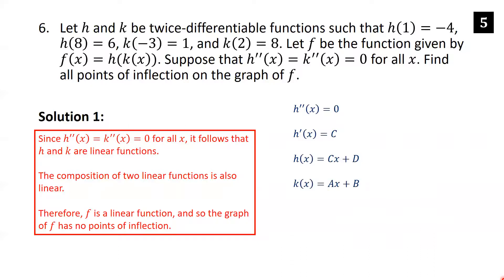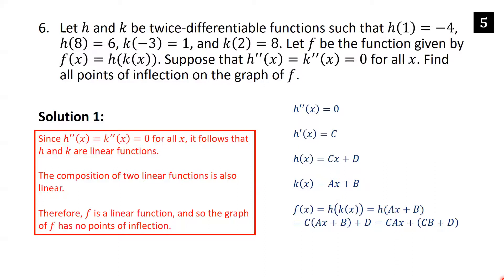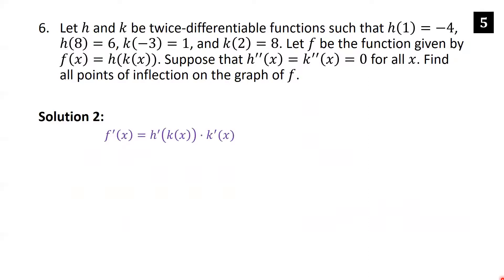To fill in the details: if h''(x) = 0, then anti-differentiating gives h'(x) is a constant c. Anti-differentiating again gives h(x) = cx + d. Similarly k(x) = ax + b. For f(x) = h(k(x)) = h(ax+b) = c(ax+b) + d = cax + cb + d, which is linear — a constant times x plus another constant.